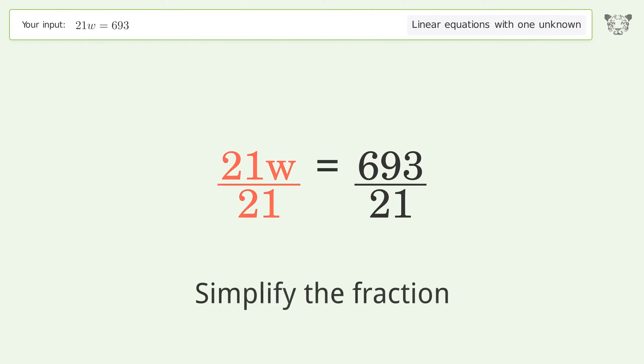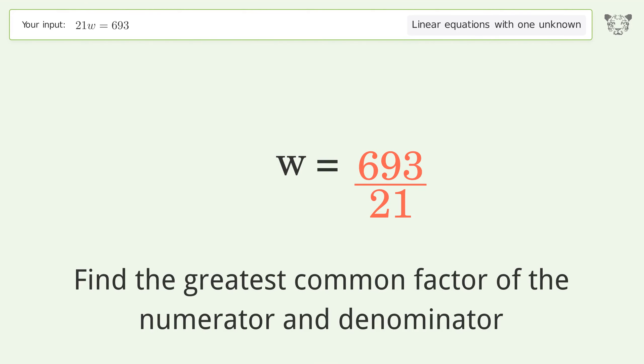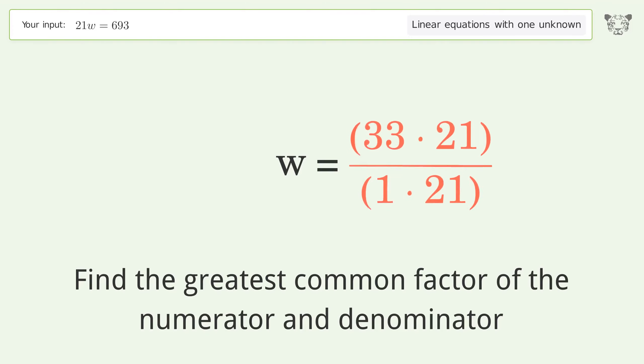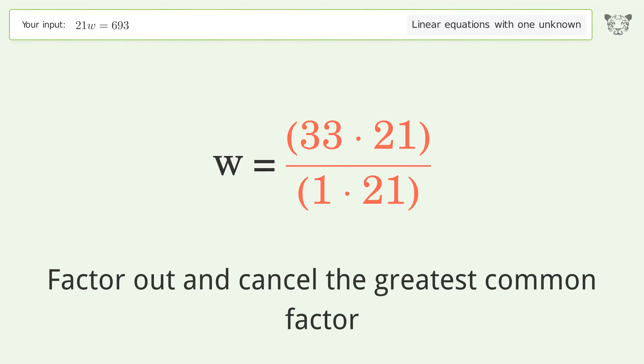Simplify the fraction by finding the greatest common factor of the numerator and denominator, then factor out and cancel the greatest common factor.